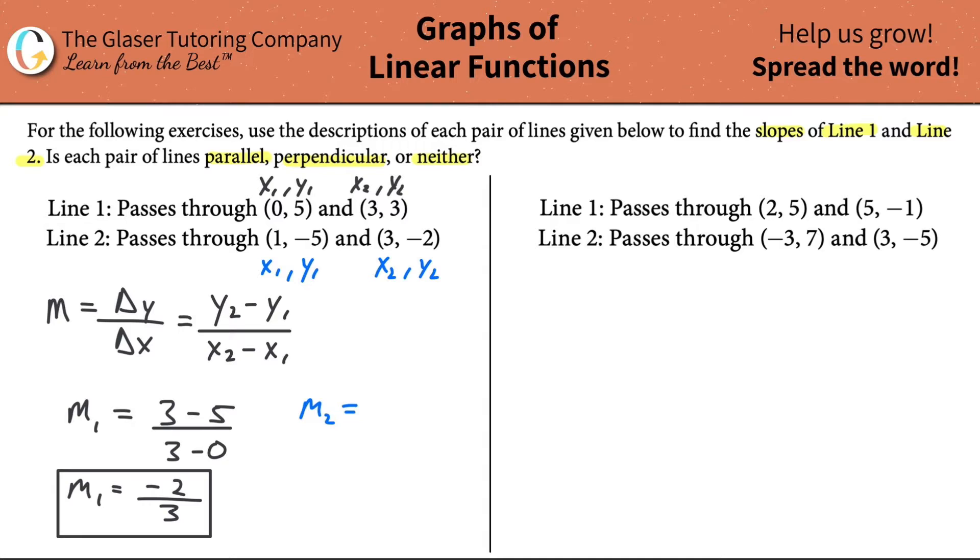So, our y2 value, which we define now as negative 2, minus then our y1 value, which is negative 5. Be careful with the signs here. Use parentheses. Then, divided by our x2 value, which is 3, minus then our x1 value, which is 1. Doing some math now on the top, it's going to be negative 2 plus positive 5, which works out to be positive 3. And then 3 minus 1 is simply 2. It's just going to be 3 halves.